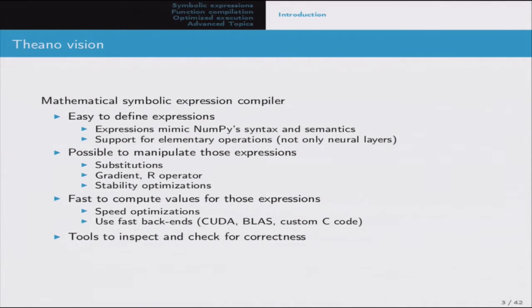Theano makes it possible to manipulate expressions, doing graph substitutions, cloning and replacement. It also enables going through the graph and performing automatic differentiation - symbolic differentiation actually - or the R operator for forward differentiation, applying some optimizations for increased numerical stability. Then it's possible to use that optimized graph and Theano's runtime to actually compute output values given inputs. We also have tools that help debug both Theano's code and the user's code.